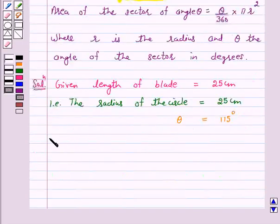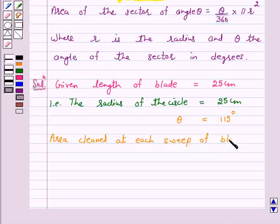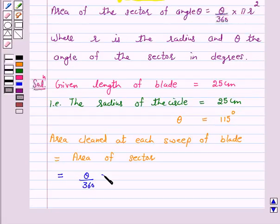Area cleaned at each sweep of the blade is equal to area of the sector with radius 25 cm and angle at the center 115 degree. And according to our key idea, this is equal to theta upon 360 into pi r square.